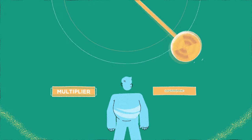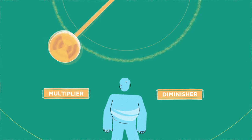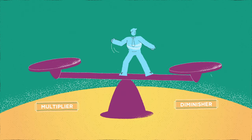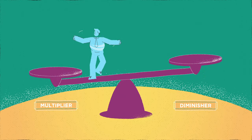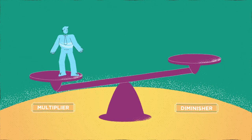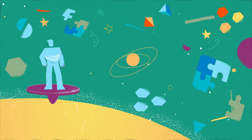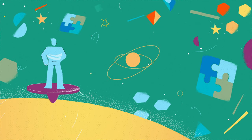Multiplier and diminisher aren't either-or identities. Most leaders fall somewhere in between and can move in either direction. And even the strongest diminisher can change. To aid our transformation into a multiplier, there are some accelerators that help us embrace collaborative and empowering behaviors.